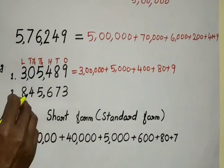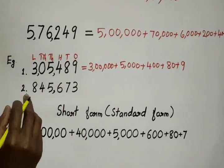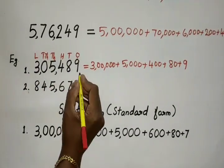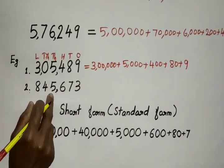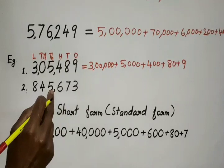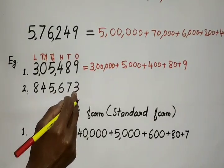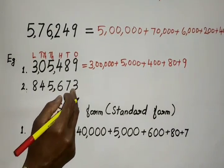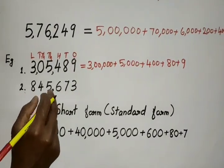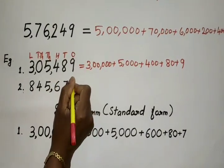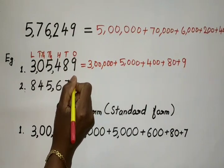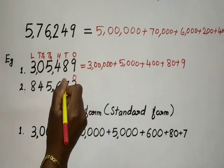Next, example 2: 845,673. You know this is the international system. Let us write the place where each digit is placed.